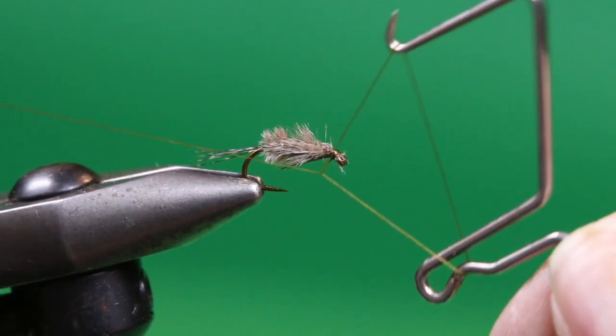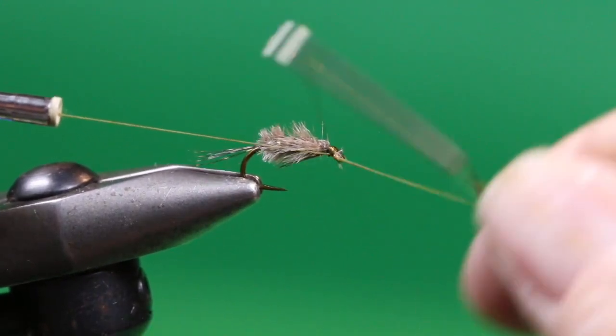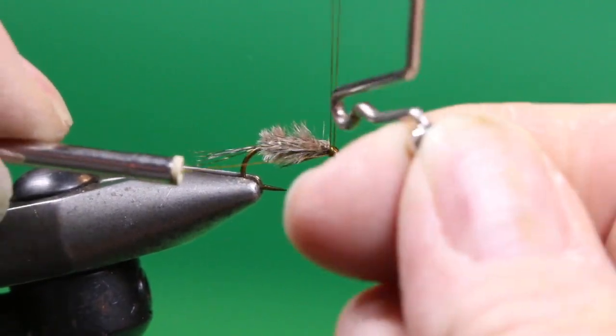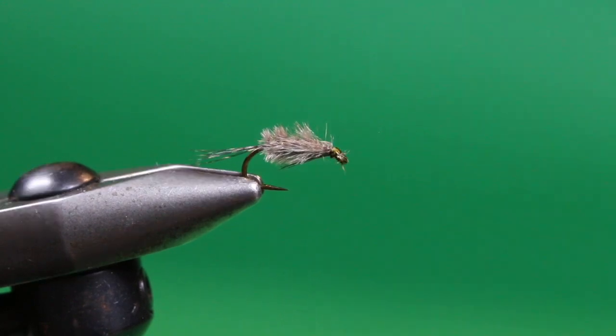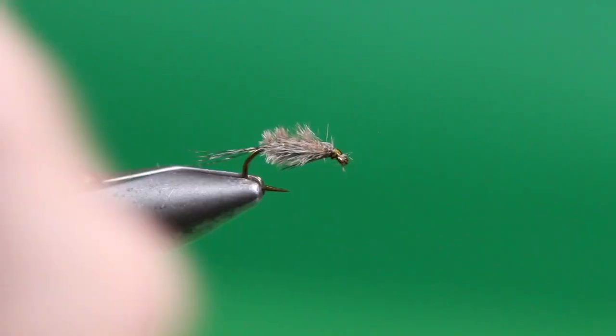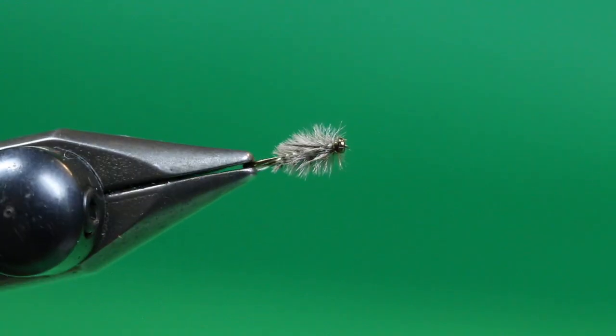Bring our whip finisher in. Disengage. Trim away the excess. And there you have it, a little Hurlback.